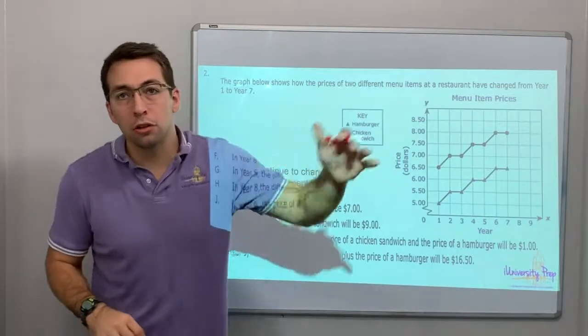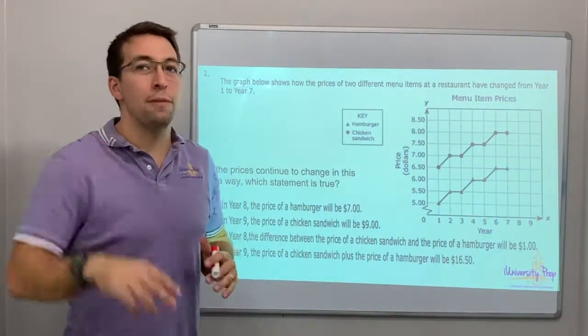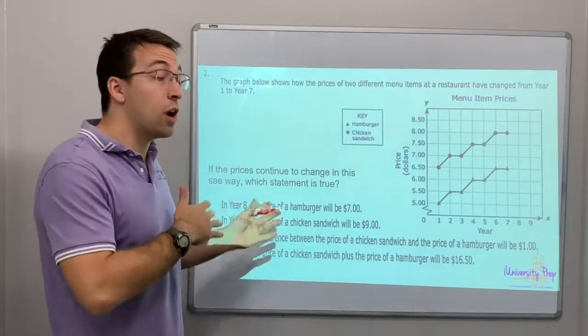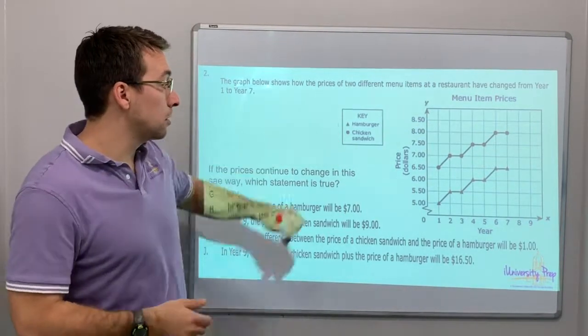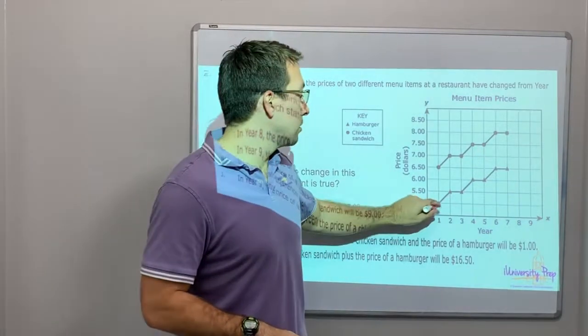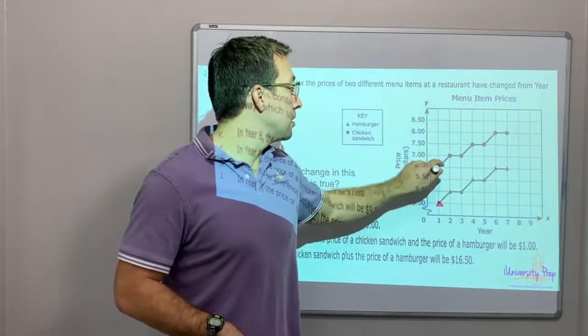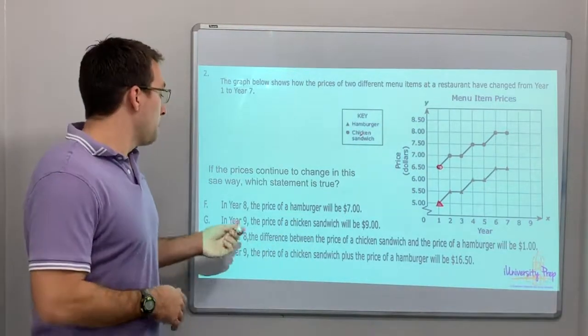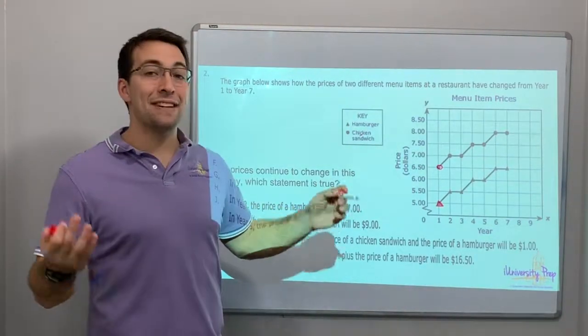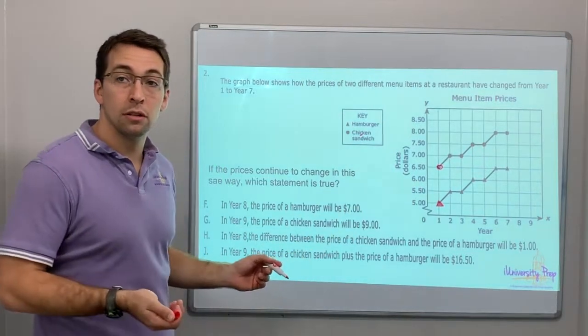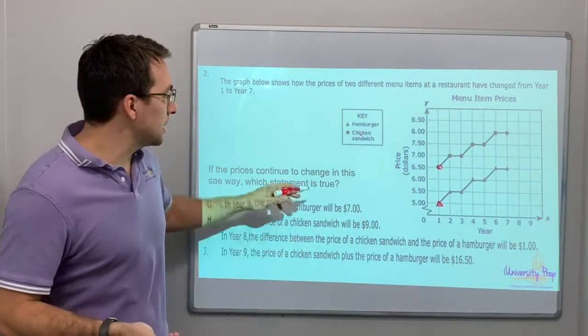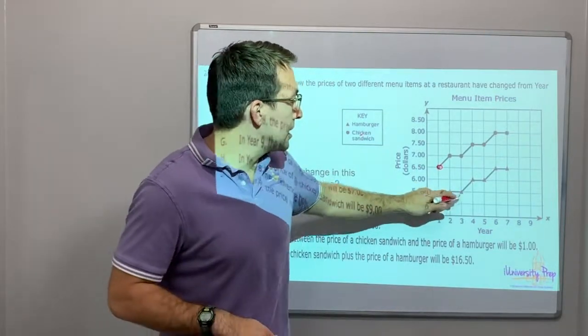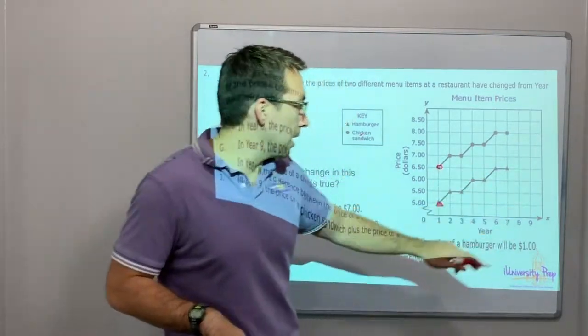The graph below shows how the prices of two different menu items at a restaurant have changed from year to year, from year one to year seven. The triangles, this is the triangles, this line, and these are the circles. Hamburgers versus chicken sandwich. I guess this is a pattern, right? You go up one year, and then you stay the same, then up, and then stay the same, then up, and then stay the same.